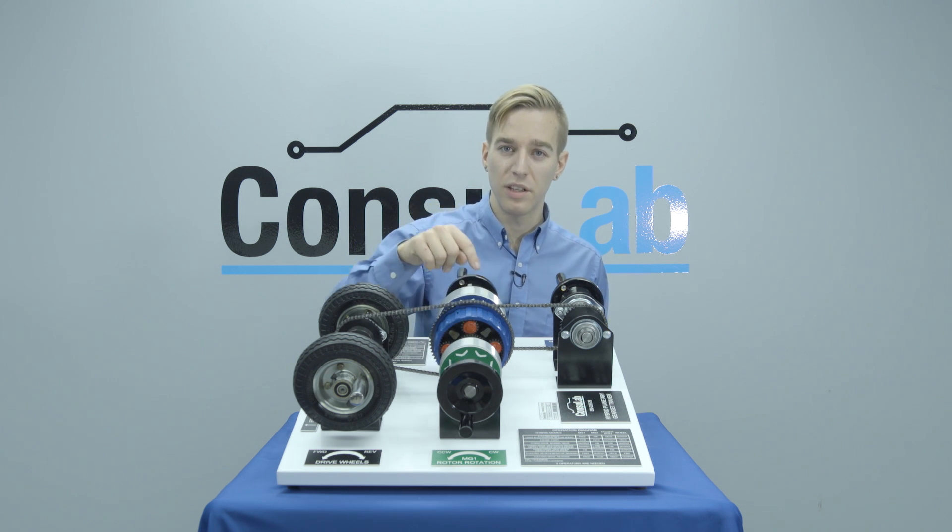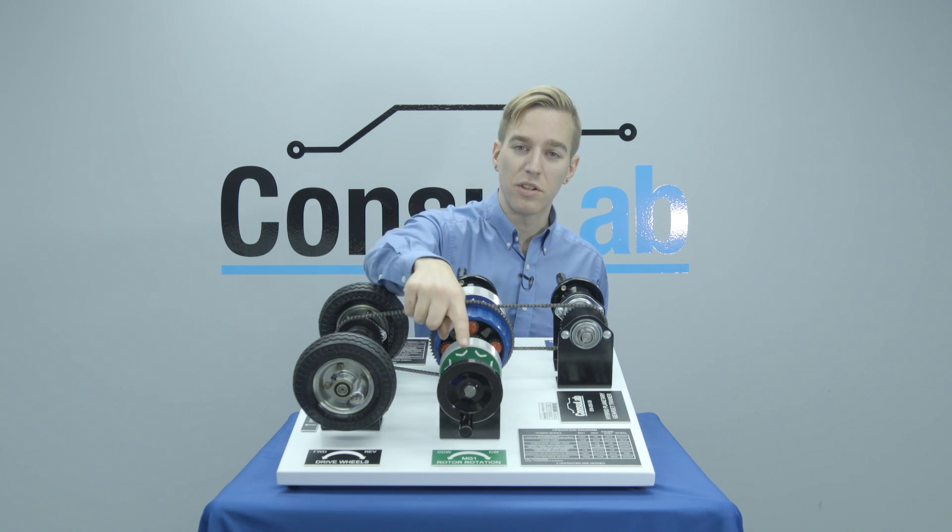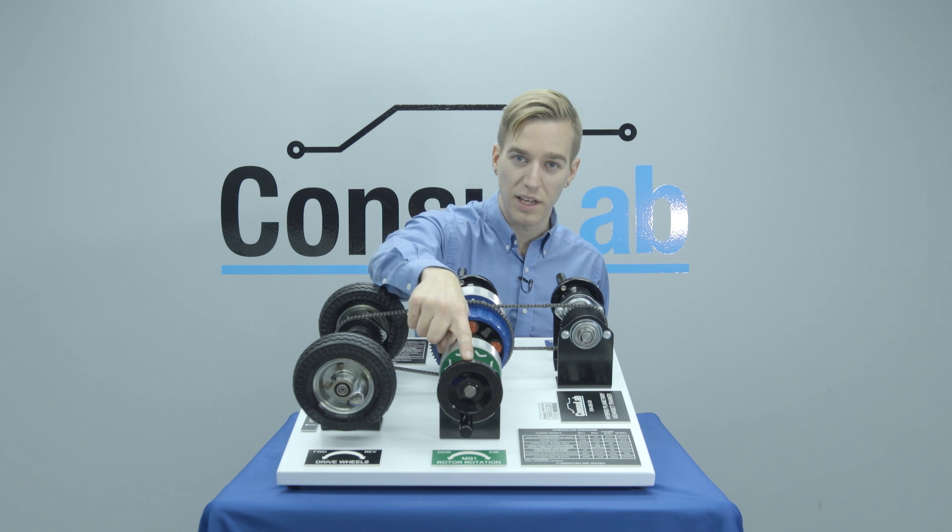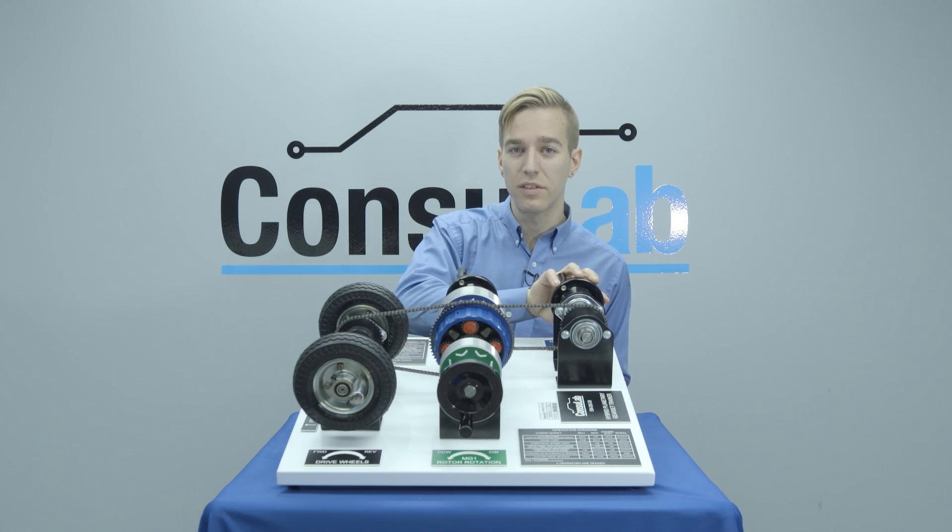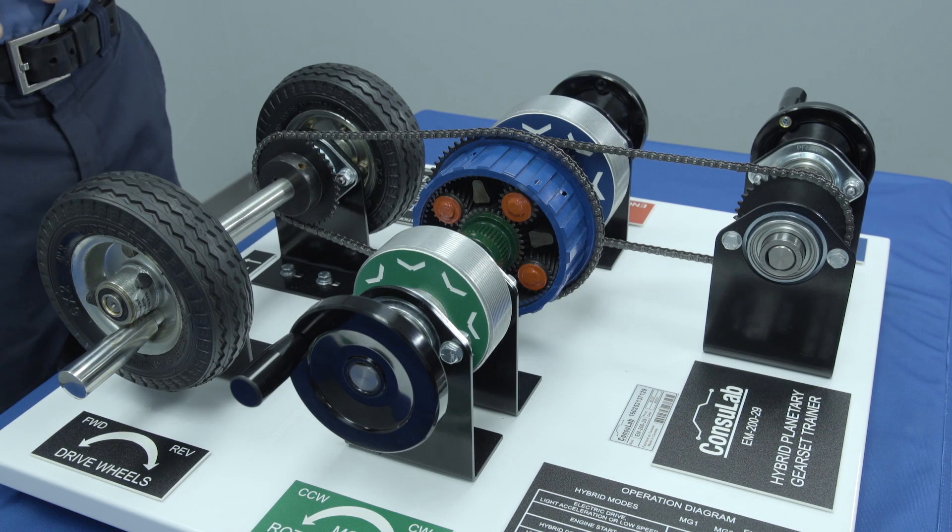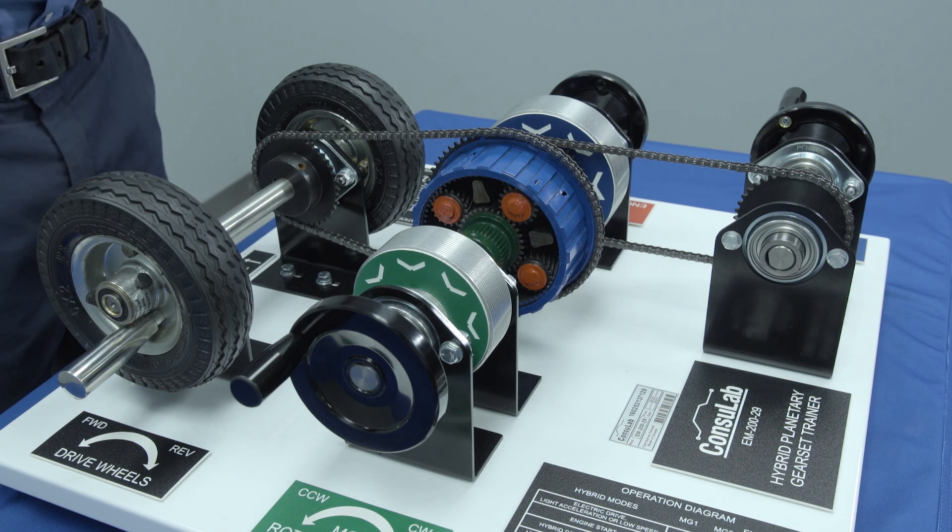Each of these electric motors can be turned by a handle. Here for MG1, and if we look for MG2 we have a handle off to the side here. So now let's get a little bit more in depth with each one of the components.